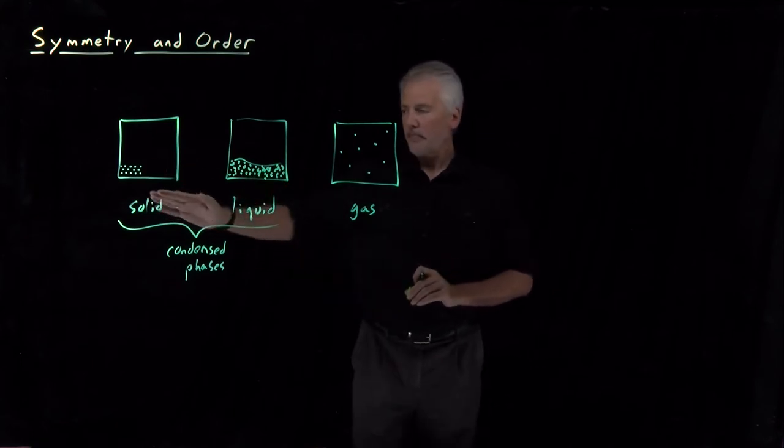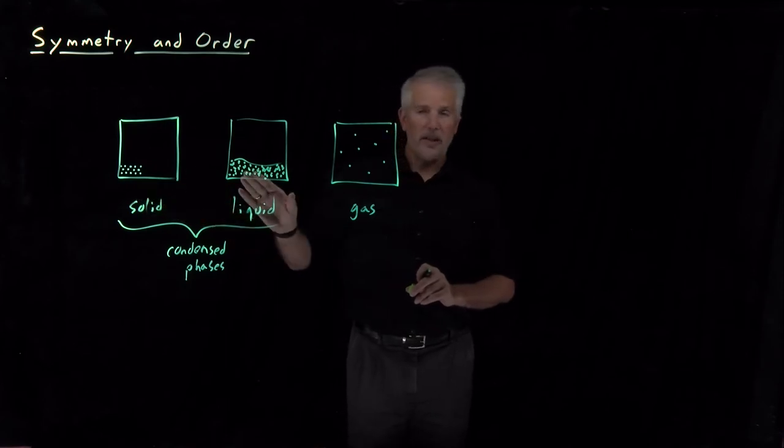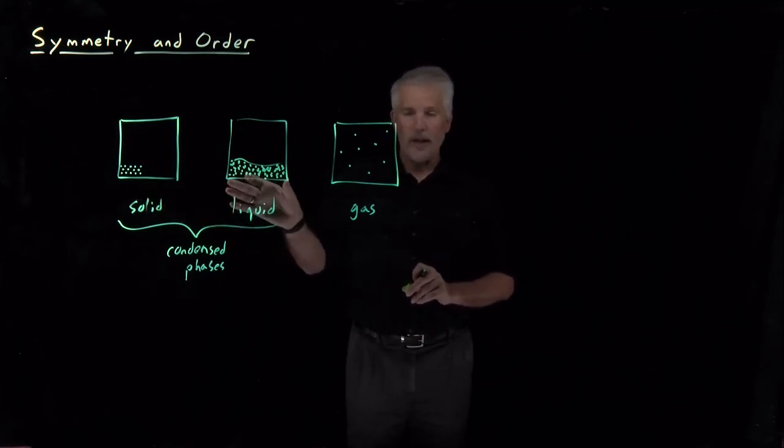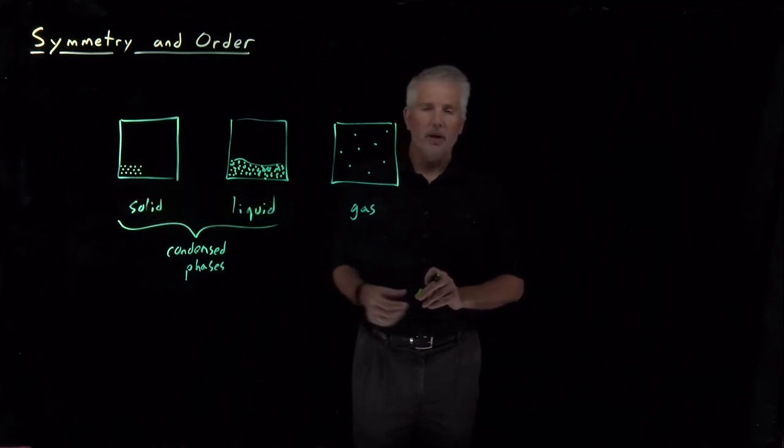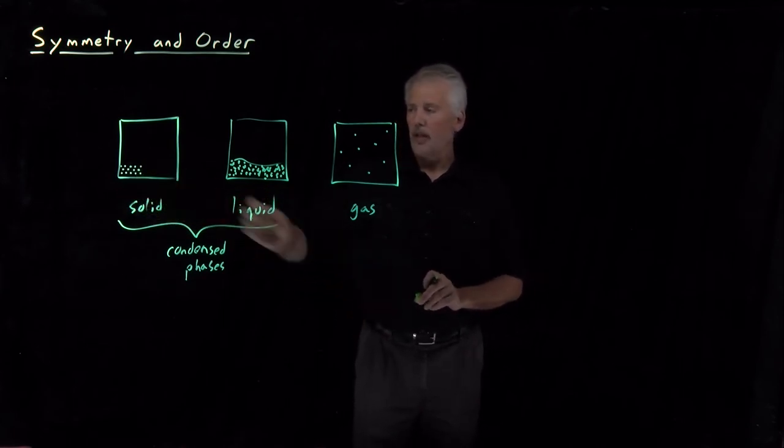The difference between solid and liquid is in the ordering of the atoms. If the atoms are relatively random or disordered, we call it a liquid. If the atoms are ordered and obey some sort of regular pattern, then we call it a solid.